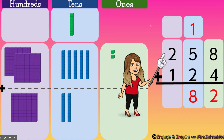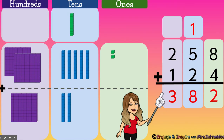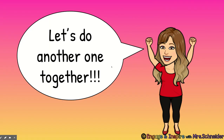I didn't have to carry anything, so I'm going to add my hundreds. I have one, two, three — two plus one is three hundreds. So 258 plus 124 equals 382. All right, let's do another one together.